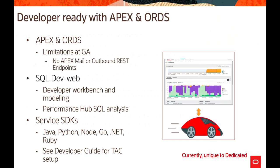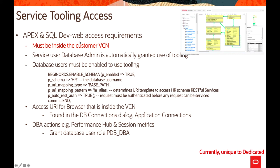For APEX and SQL Developer Web access, the requirements are that they must be inside the customer VCN. The service user (database admin) is automatically granted use of tooling, and database users must be explicitly enabled. By using the enable schema procedure you can grant this privilege to any other user within the database. You can access the URL from a browser inside the VCN; if not inside the VCN, you can use port forwarding through a bastion host. This is found in the DB Connection dialogue. Application connections to all DBA actions — Performance Hub, session metrics, grant database user roles, PDB, and SQDBA — are available through this tooling.